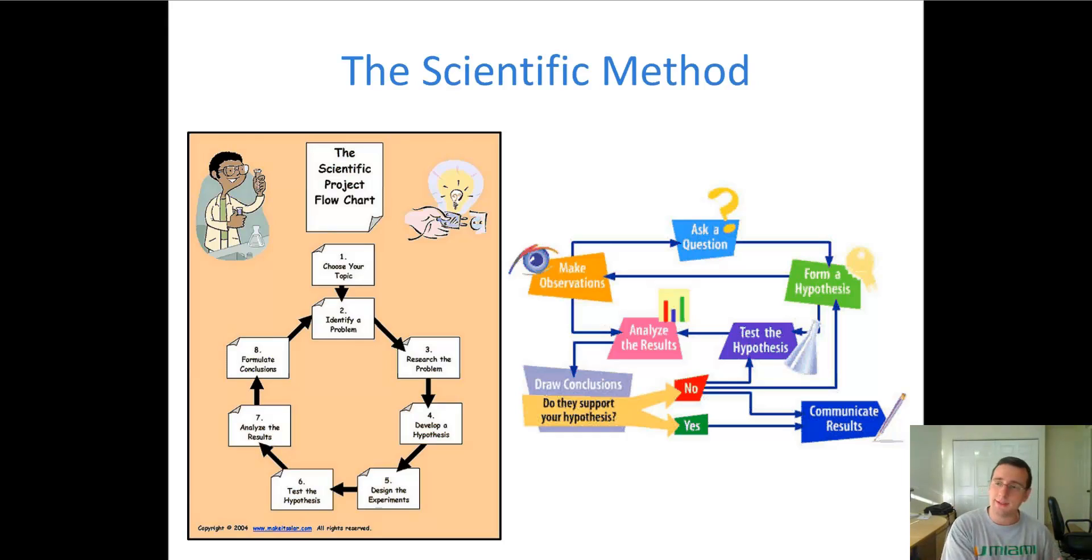Now you analyze this data, and then you draw conclusions from the analysis that you made. Now sometimes the conclusion will be that the results rejected the hypothesis. The hypothesis was incorrect. In which case, you start over, back to the question, back to try to see a different explanation that could possibly work.